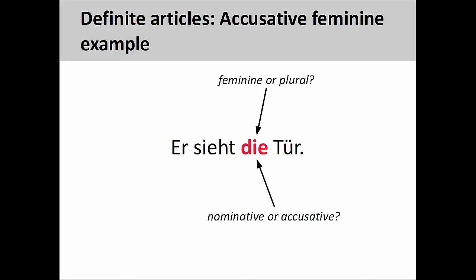Besides paying attention to personal pronouns, it is critical to consider other sentence elements, such as verb conjugations and noun endings, to understand what is going on. This is especially important when definite articles have similar forms.